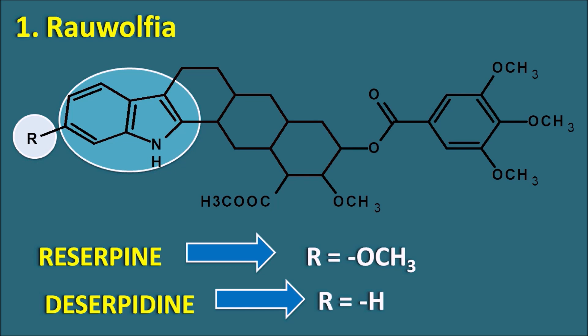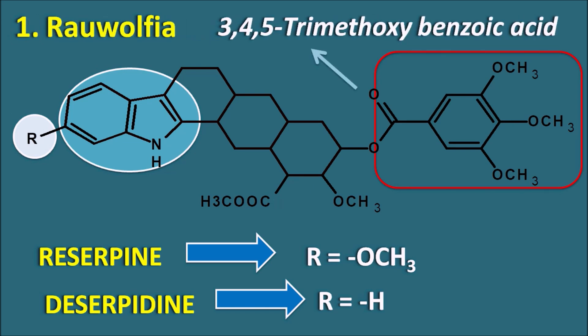Reserpine and deserpidine are the two important alkaloids present in Ravolfia, coming from Ravolfia serpentina and other Ravolfia species. Chemically, Ravolfia alkaloids form an ester linkage — one moiety released is 3,4,5-trimethoxybenzoic acid. So Ravolfia alkaloids form esters with 3,4,5-trimethoxybenzoic acid, where the alcohol part carries the indole nucleus.